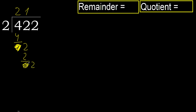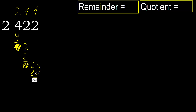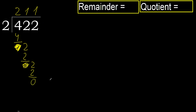Bring down 2. 2 multiplied by 1 is 2, which is not greater. Subtract. That is not a number, therefore finish — the division is complete.